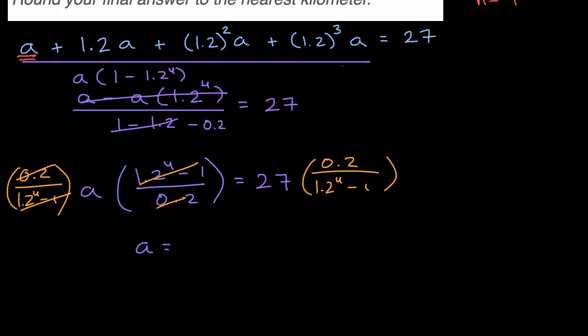And we're left with A is equal to, I'll just write it in yellow, 27 times 0.2, all of that over 1.2 to the fourth minus one. And this expression should give us the exact same value as that expression we just saw. But this is useful even if we had 100 terms, we could use this.